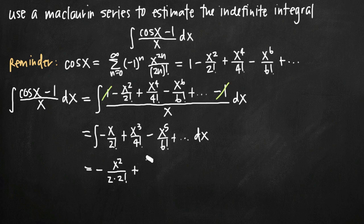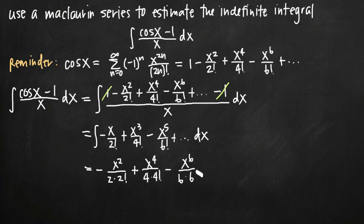So we'll have x to the fourth divided by 4 times 4 factorial. Then we increase the degree of the next x term by 1 to get x to the sixth, divide by the new exponent 6, keep the 6 factorial, and add dot dot dot plus C to account for our constant of integration. Now we have a series representing the integral of cosine of x minus 1 divided by x. All we need to do is find a series representation using summation notation.